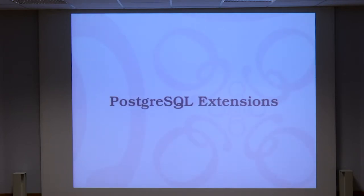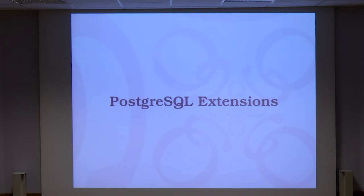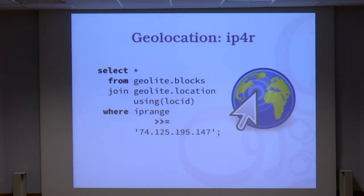In PostgreSQL we have 72 different data types by default. Maybe that's not enough. Let's see some other ones. In PostgreSQL it's really easy to install an extension and play around with it. One extension I like is IP address ranges.